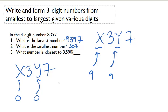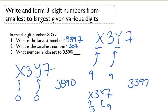What number is closest to 3, 5, 9, 0? So if we have X, 3, Y, 7, put a 3 in here to get it close to 3,590. We can put a 9 in here. So our answer is 3, 3, 9, 7.